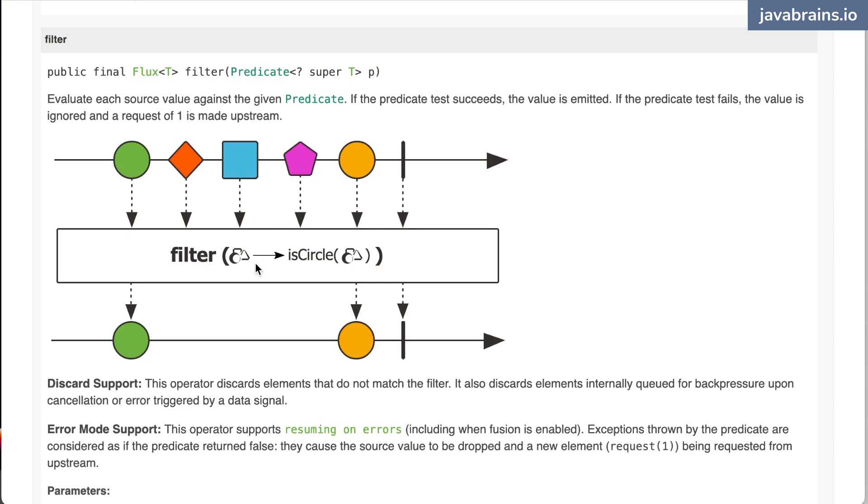So here, this is a predicate which is a 'is circle' predicate. This returns true if the item that's coming in is a circle, and if it's not a circle, it returns false. So this one's a circle, so it goes through. Here's a new flux that's resulted from the application of this operator. This one goes through because this is a circle.